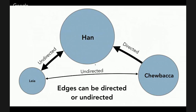A directed edge has some kind of direction — whether authority, whether movement. On Twitter, following is a directed relationship because I can follow someone and they can choose not to follow me back. They might also follow me back, and then we could decide whether that is one undirected relationship or two directed relationships. You might similarly think of a professor and their students as a directed relationship having to do with experience or authority.